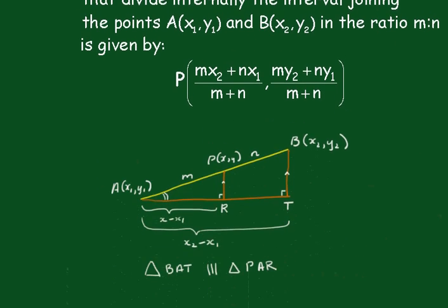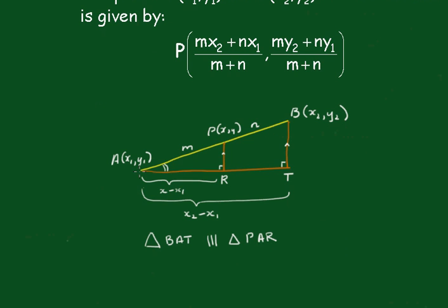I'll draw a little diagram here representing these points. We can see that's the point A and that's the point B, that's the point P and the ratio is m to n.